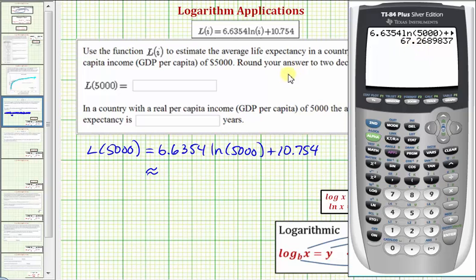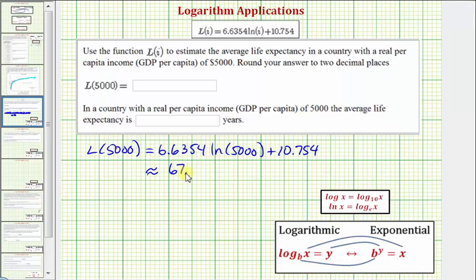We're asked to round to two decimal places. So L(5000) equals 67.27, which means in a country with a real per capita income of $5,000, the average life expectancy is 67.27 years of age.